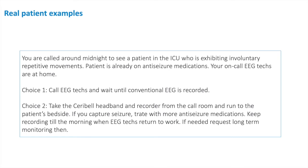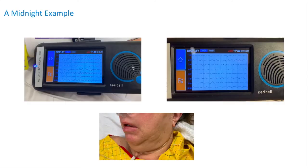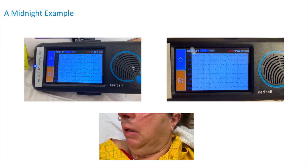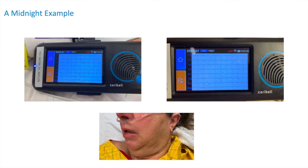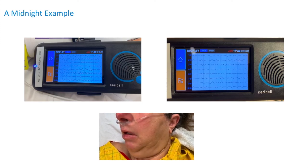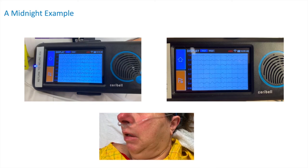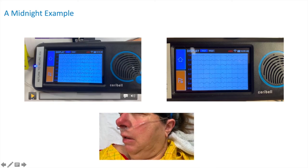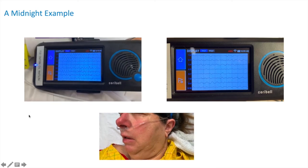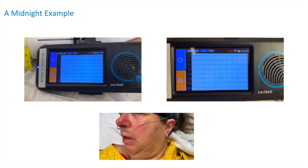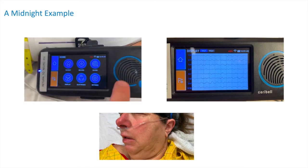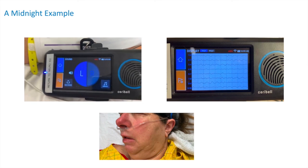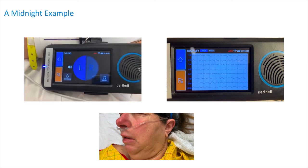This attending went to the bedside right away. Here is a video of the patient exhibiting those repetitive movements, with the brain stethoscope audible in the background. The visual display of the patient's EEG shows repetitive, sharply contoured, continuous epileptiform discharges indicating status epilepticus.